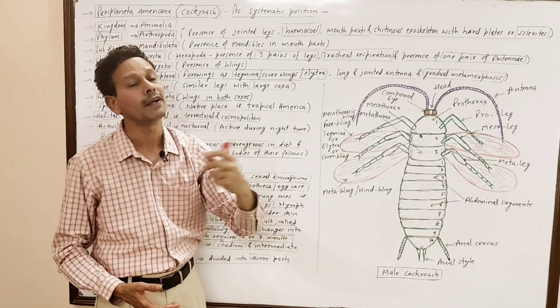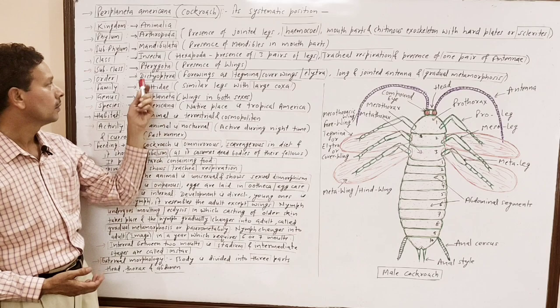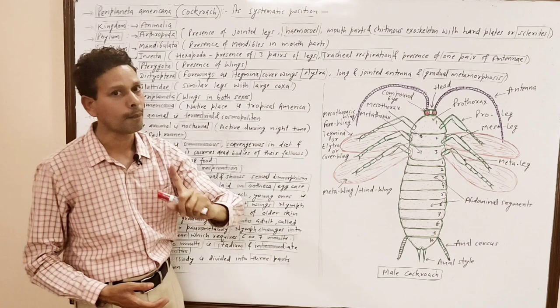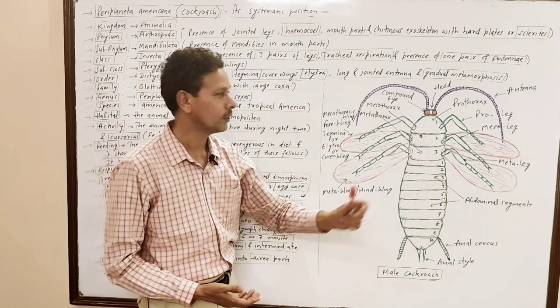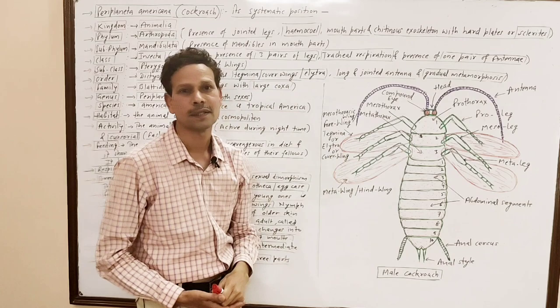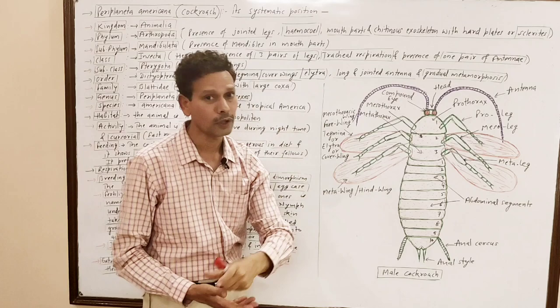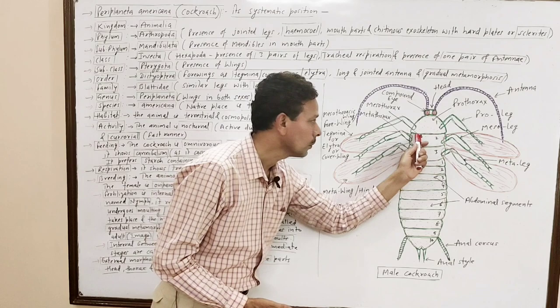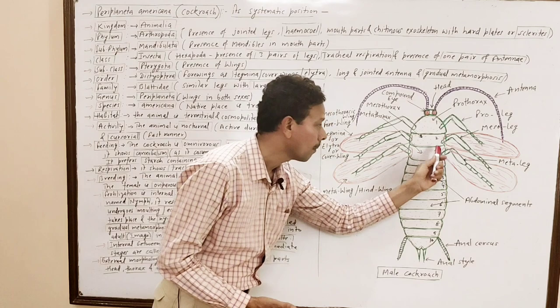Sub-class Pterygota — presence of wings. Note down for competition students: on the thoracic region, which is divided into prothorax, mesothorax, and metathorax, there are two pairs of wings. The first pair of wings is present on the mesothoracic segment and the second pair of wings is present on the metathoracic region.